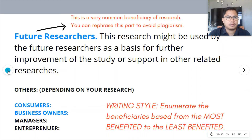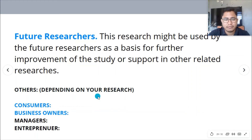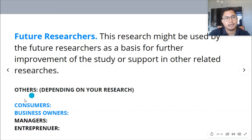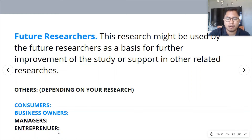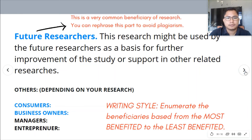The previous examples — students, teachers, administrators, and future researchers — are just examples. You can add other beneficiaries depending on your research paper. For example, if you are in business or TVL strand, you can use consumers, business owners, managers, or entrepreneurs, depending on your topic and the people concerned. You can also observe a writing style where you enumerate beneficiaries based from the most benefited to the least.